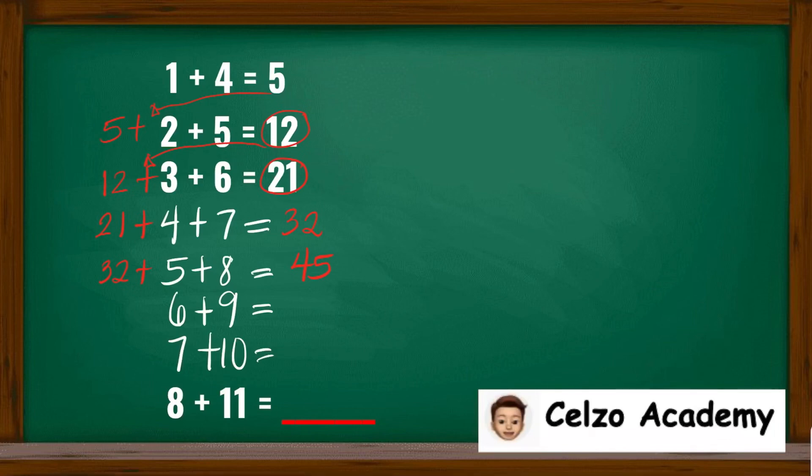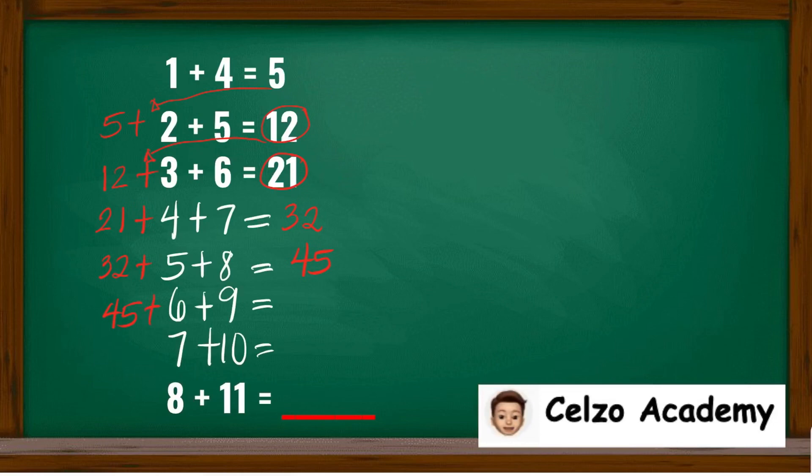For the 6 plus 9, we need to add the previous answer, 45. So 45 plus 6 plus 9 is 60.